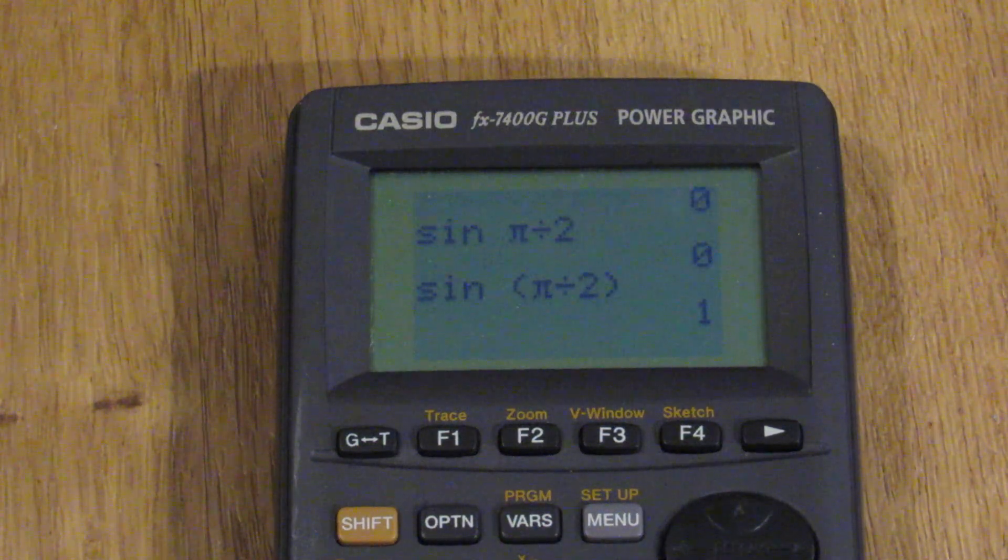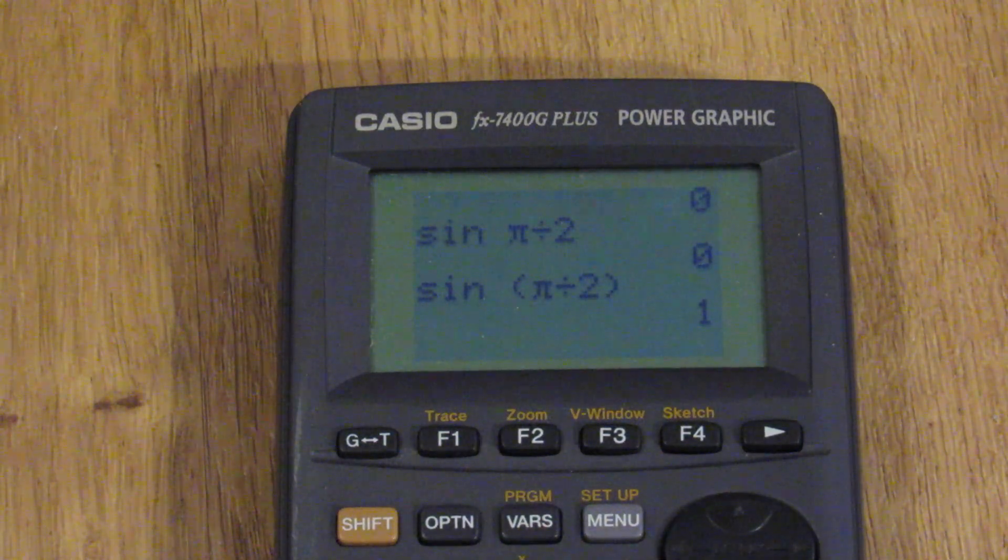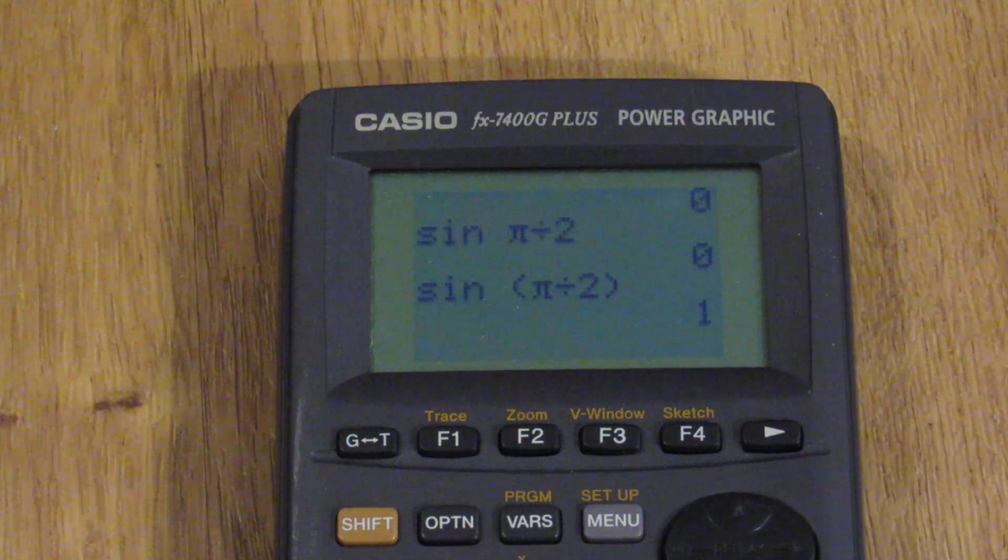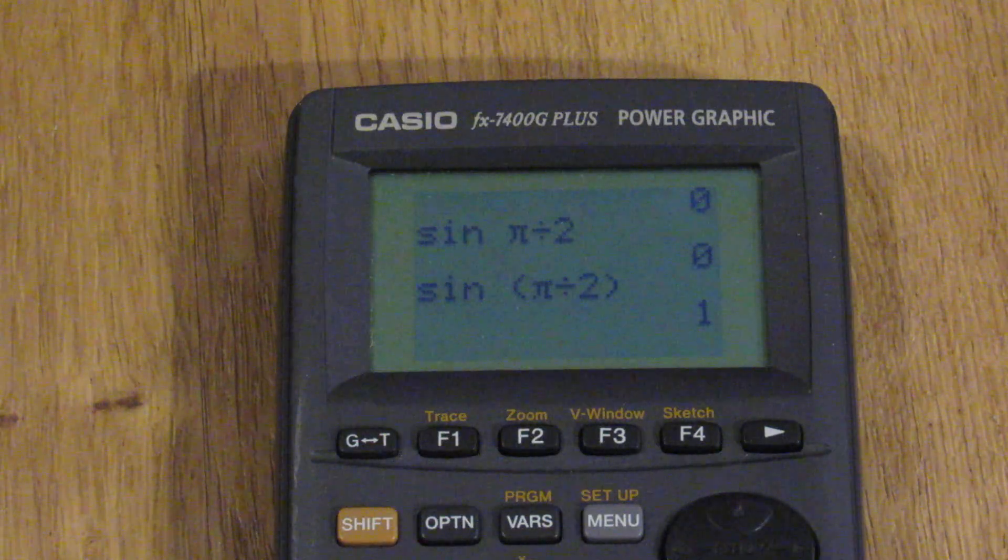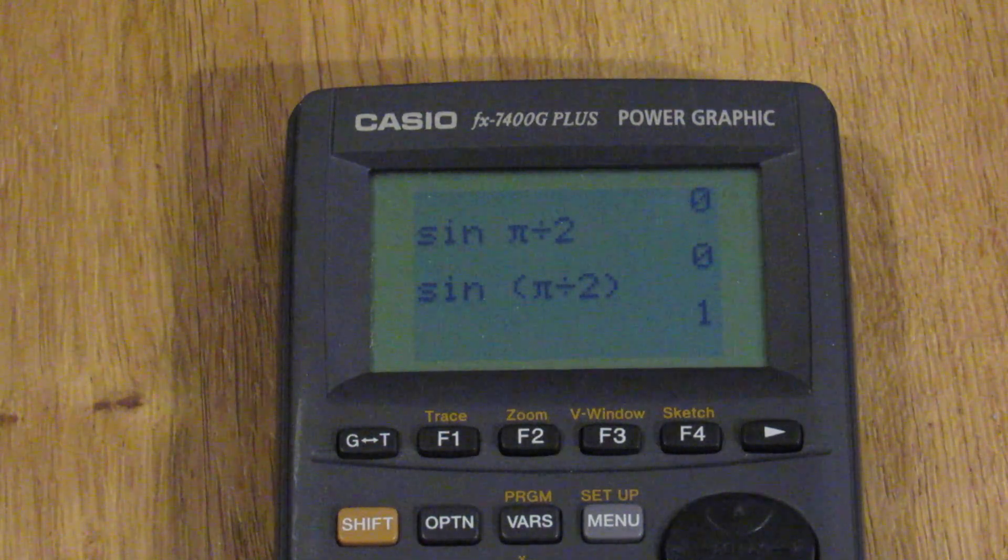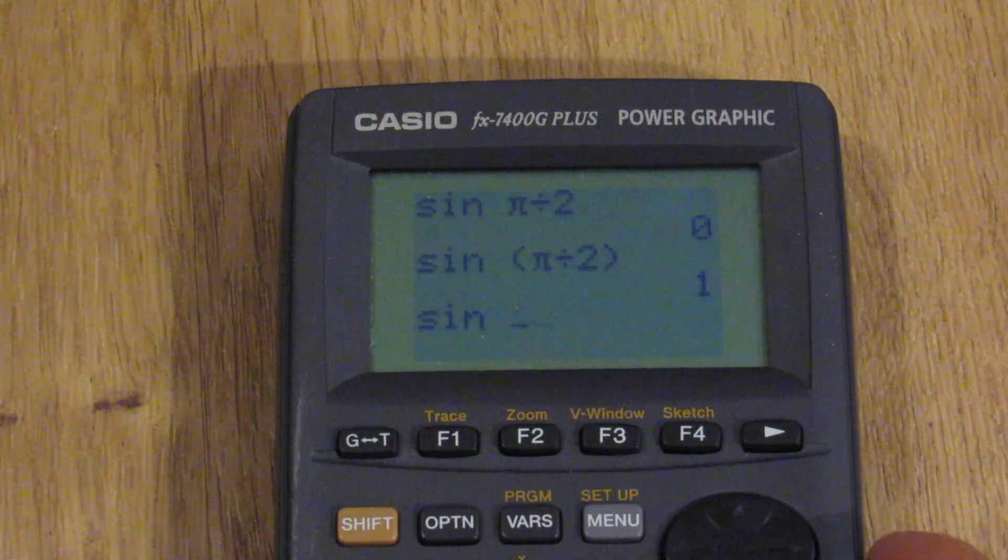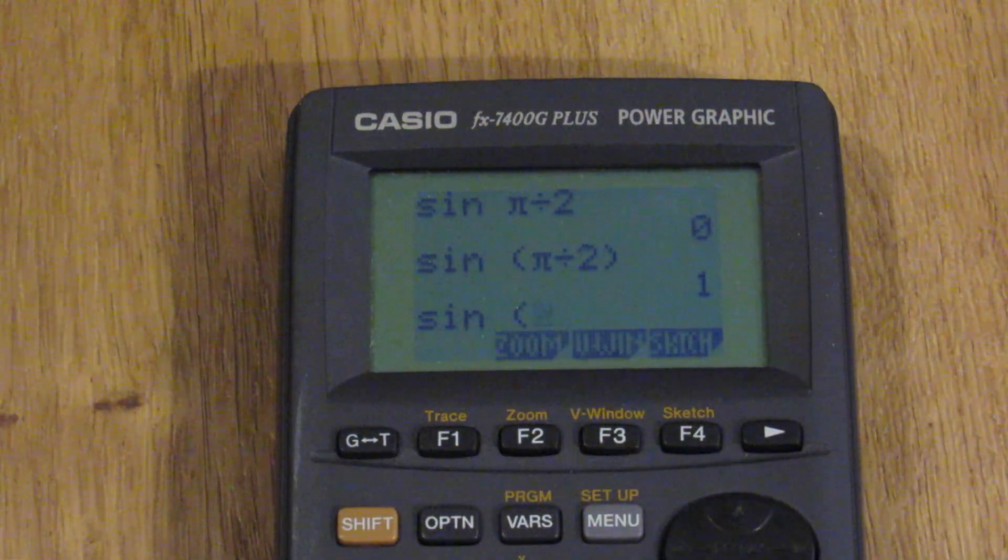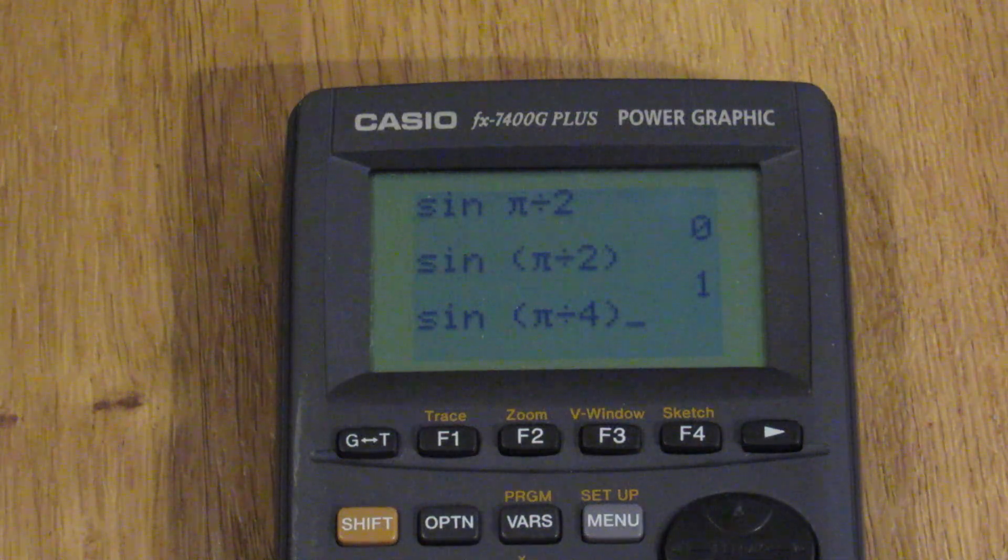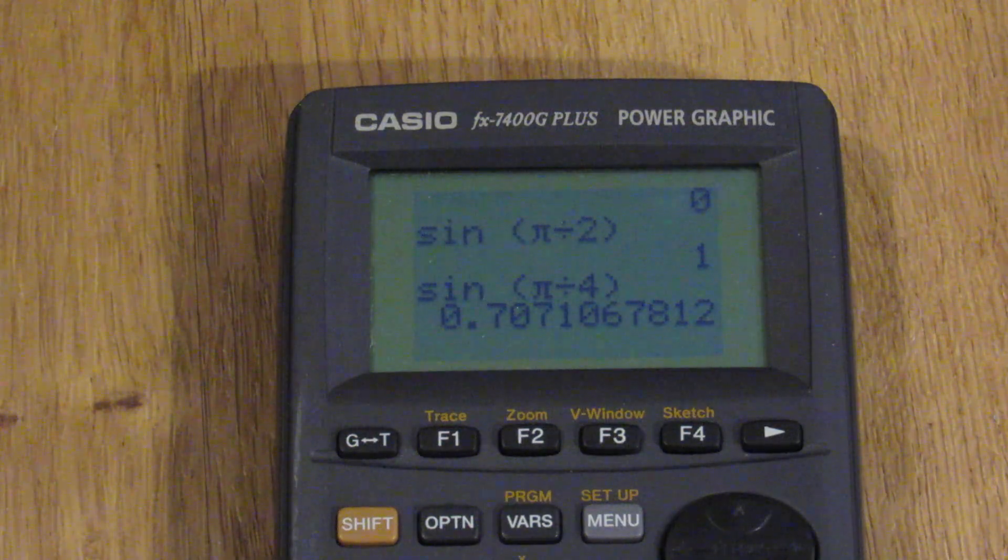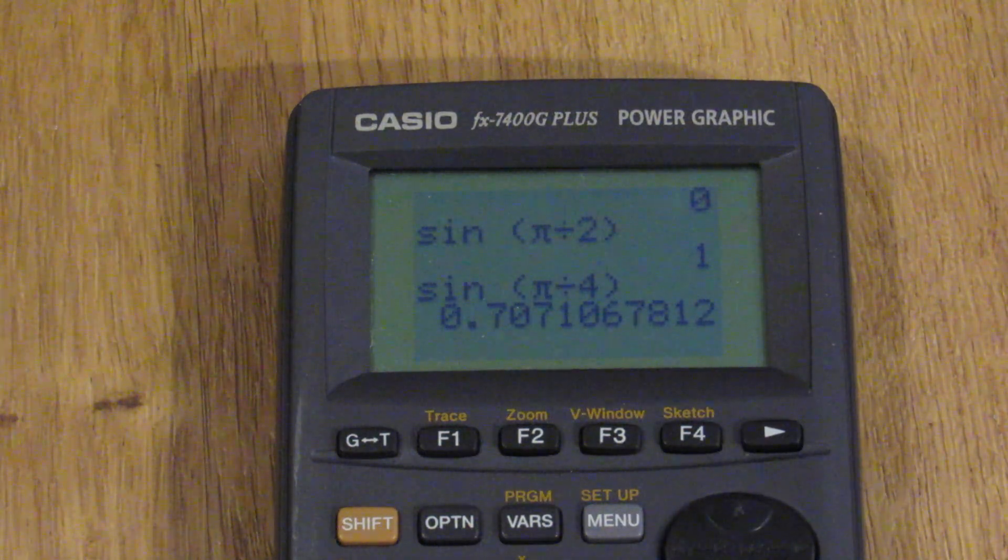Sine of, good old Casio. This should be different. Yes. So that's interesting about how the order of operations is done there. Yes. Sine of 90 degrees is one. And then if I do sine parenthesis shift pi over four, we should get 0.707 square root of two divided by two.